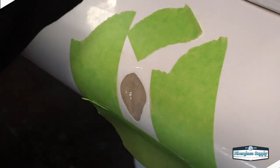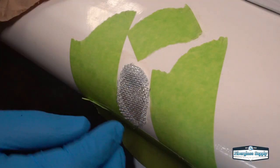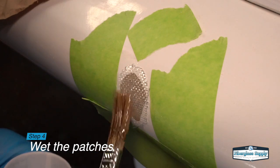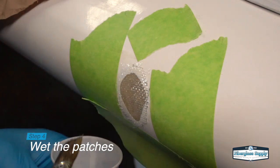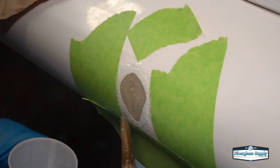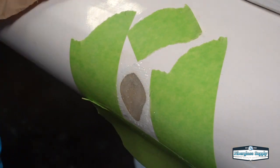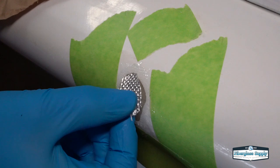We used four patches on this board and once those are cut, we move on to step four, which is to wet the patches out. So we've applied a little bit of epoxy resin to the surface of the board and now we're using our brush to just wet that fiberglass out. You can notice here that the fiberglass will go clear as the epoxy saturates it.